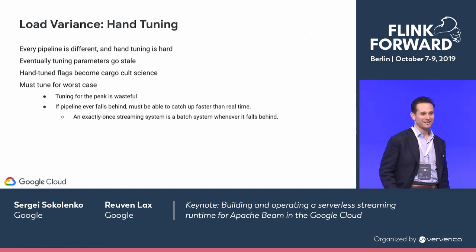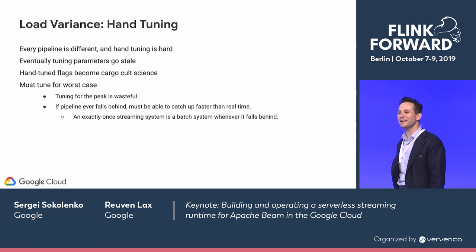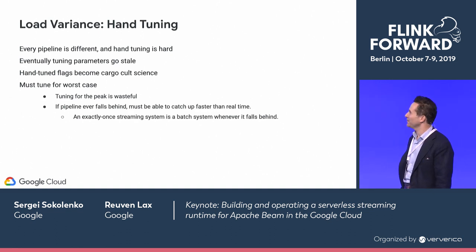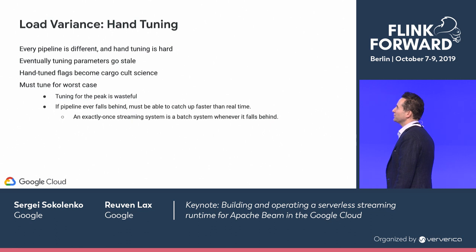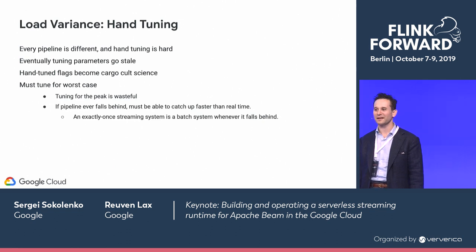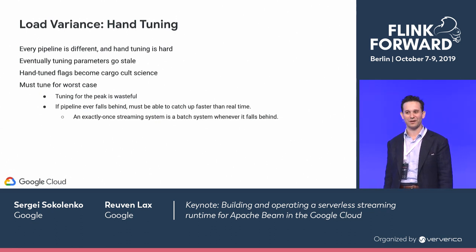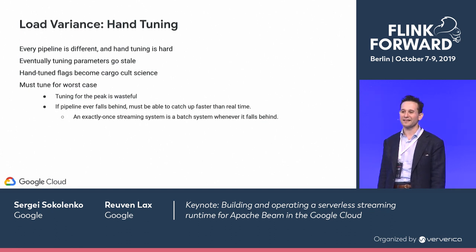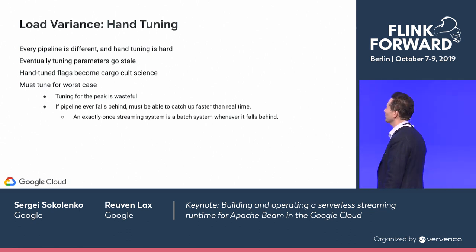The lesson we learned painfully is that trying to tell users to handle load variance via hand-tuning their pipelines can be very painful. Hand-tuning streaming pipelines is very hard — it's a lot of black magic. Once you've hand-tuned it, your tuning parameters go stale. I hand-tune in January; by October my company has grown and the input load has completely changed. My hand-tuning is stale and I have to go through the exercise again, and you tend not to figure this out until things have really deteriorated.